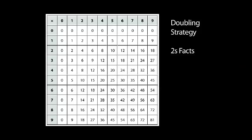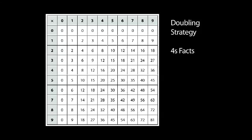And then we focused on the doubling strategy. We broke that down into multiply by two and the turnarounds, and multiply by four — so it's a double-double for the fours facts and the turnarounds.